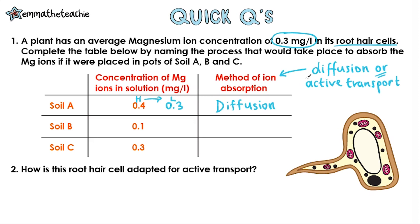For soil B, the root hair cells have 0.3 mg per litre. Soil B has 0.1 mg per litre, which is lower than 0.3, so the ions would be moving from a low concentration in the soil to a high concentration in the root hair cell. Low to high is active transport, as it's against the concentration gradient.